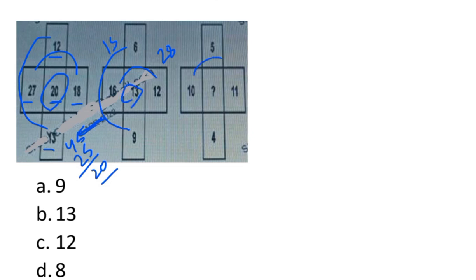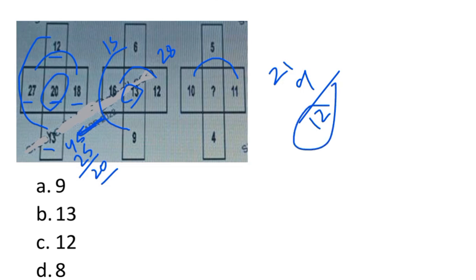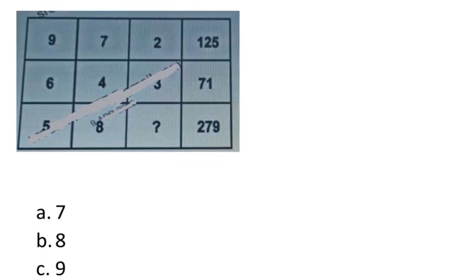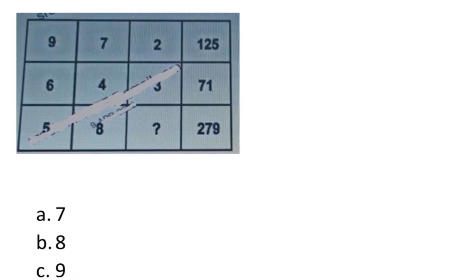Next: 21 and 9. Directly 21 minus 9: do 21 minus 10 = 11, plus 1 = 12. So the answer is option C, which is 12.